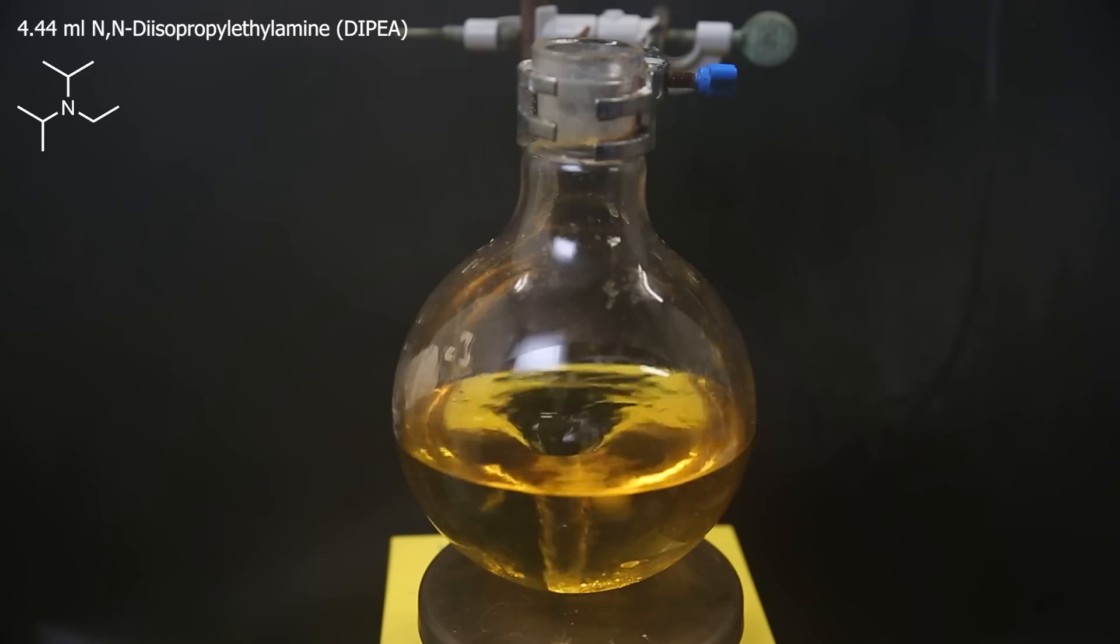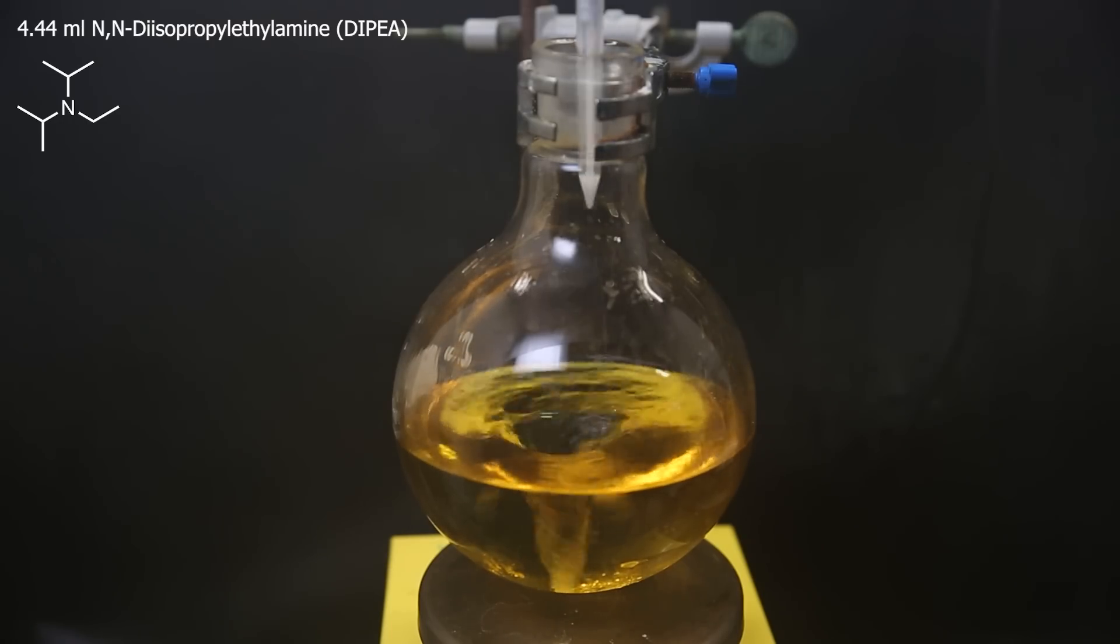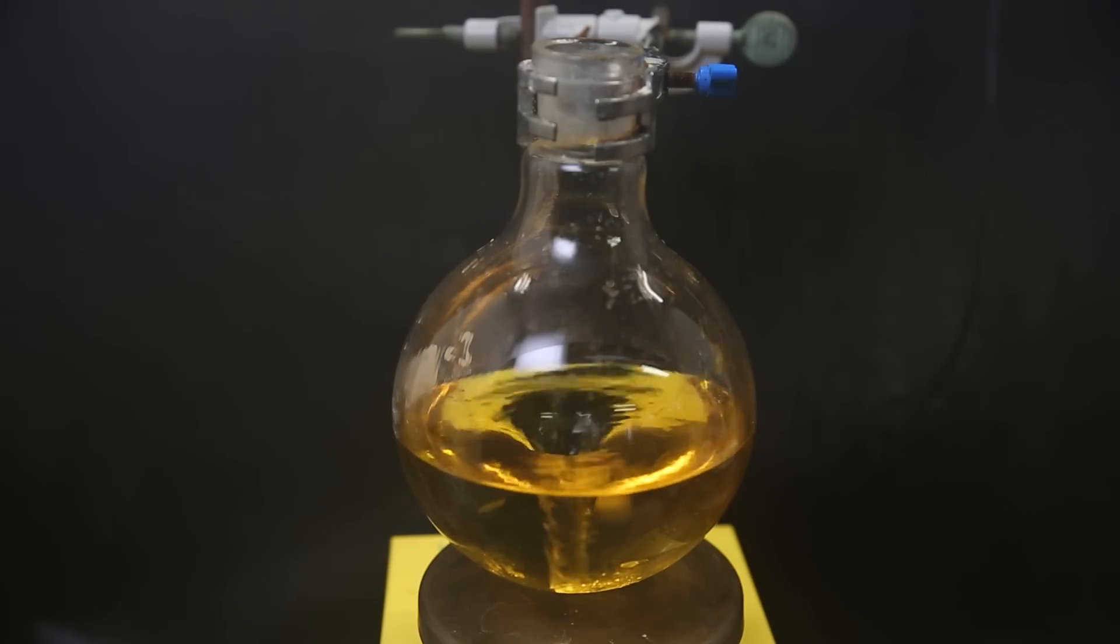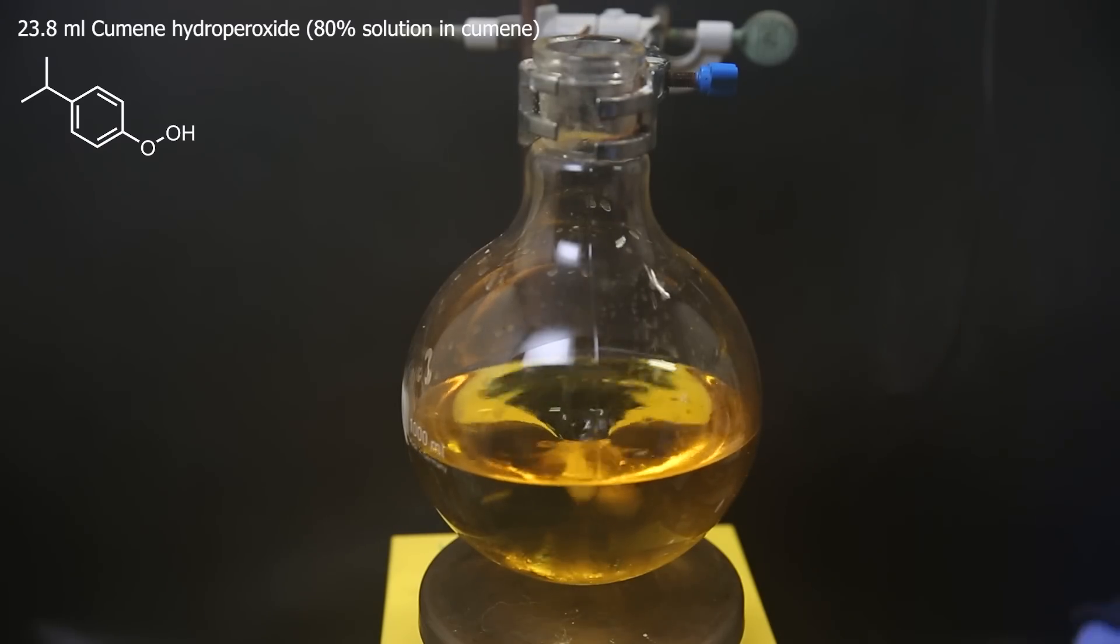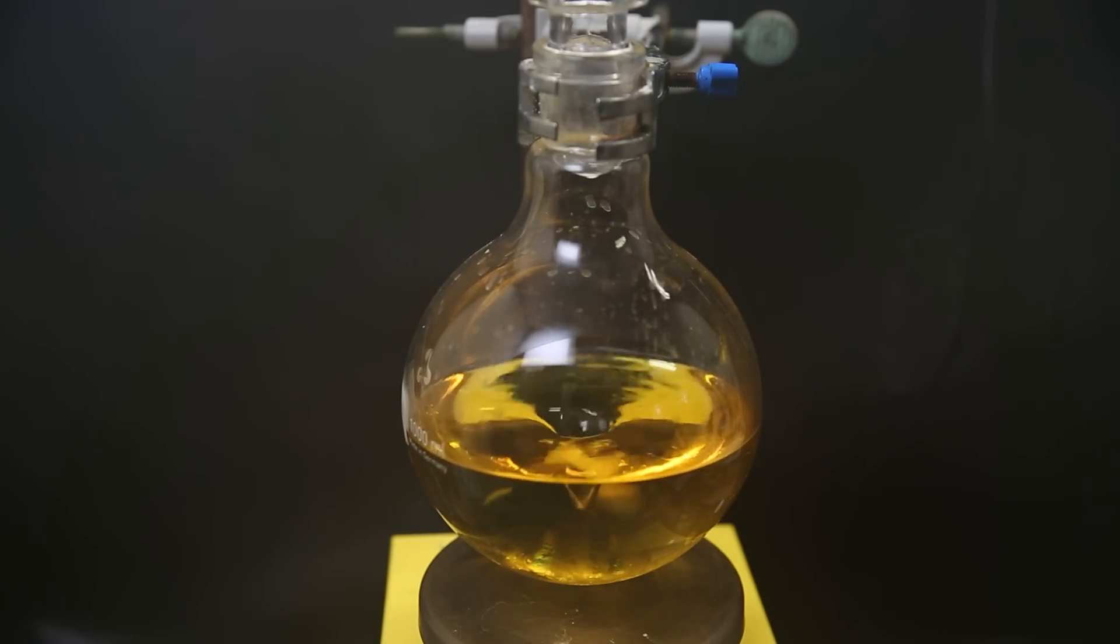After cooling to room temperature, I add in 4.44 mls of DIPEA as a base and let it stir for another 10 minutes. The catalyst is now completely ready, which means I can add the oxidizer, so I slowly add 23.8 mls of the oxidizer cumene hydroperoxide. When that's done, I leave it to stir at room temperature for 20 hours.